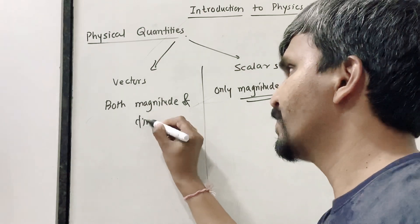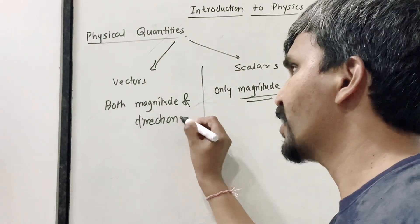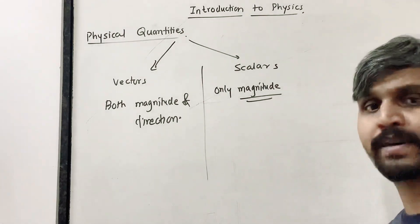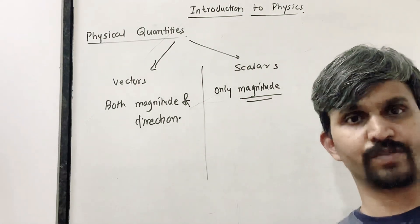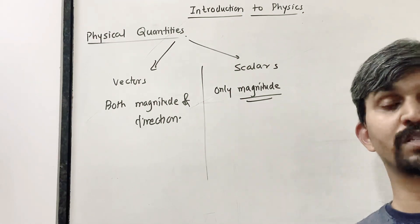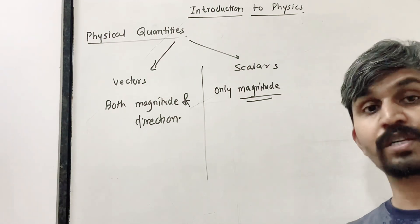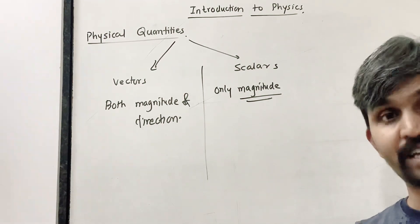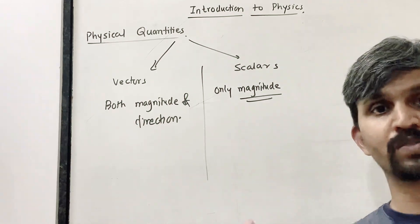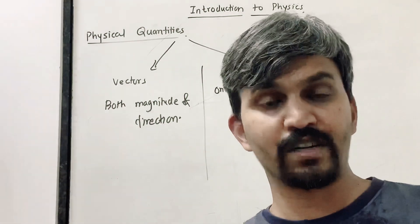If I say mass is 10 kg, that is a scalar — only magnitude is needed. But if I say force is 10 Newton, I need to specify the direction: towards east, towards west, upward, or downward. That is what makes it a vector quantity.